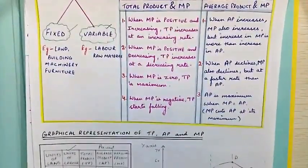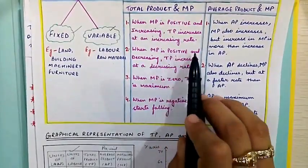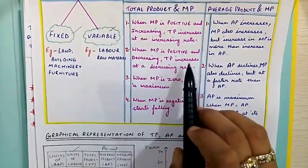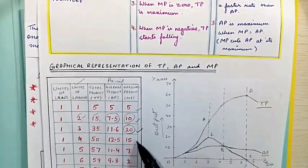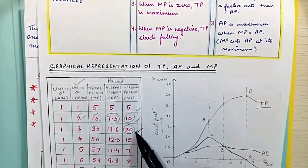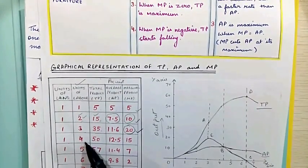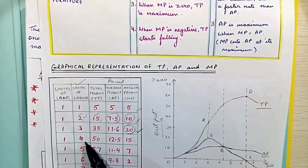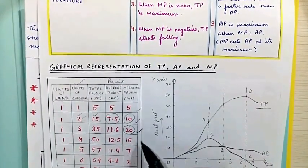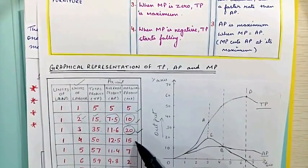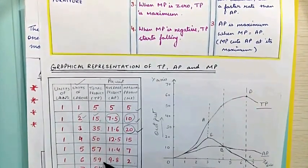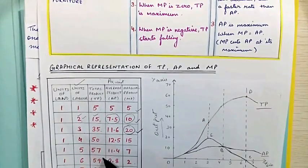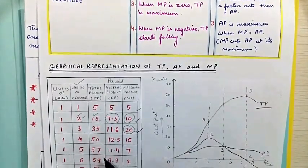After that, when MP is positive and decreasing, TP increases at a decreasing rate. MP is still positive — 15, 7, and 2 — but after the fourth unit of variable factor is employed, MP has started declining. There is still an increase in total product, but this increase is at a decreasing rate.